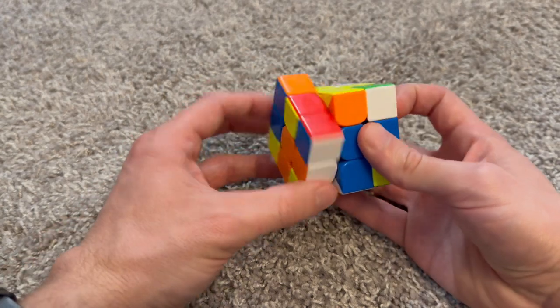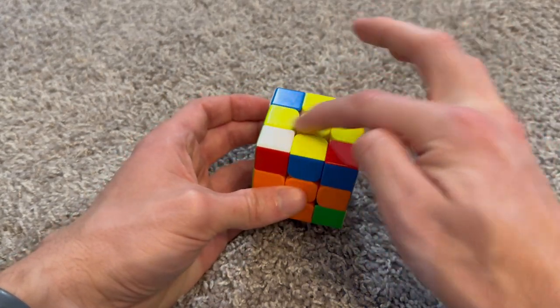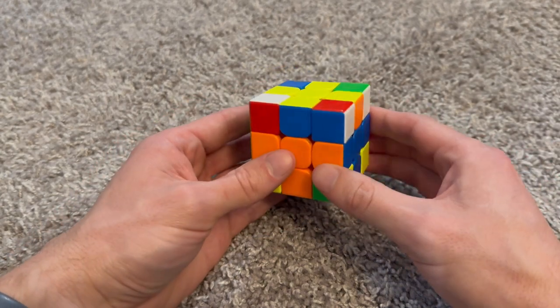What I was able to do before putting in the last edge in the middle layer, I'm going to do edge orientation, so that when you put in the last edge, you get all yellow on the top.